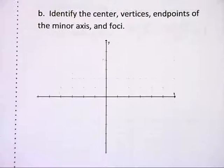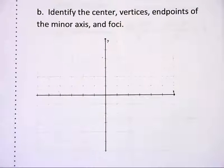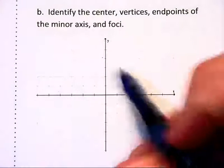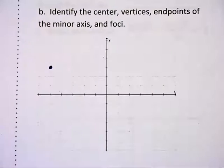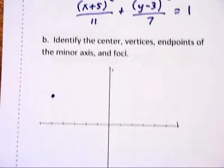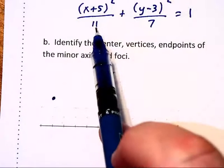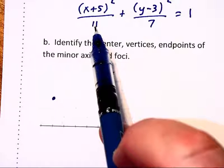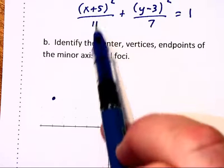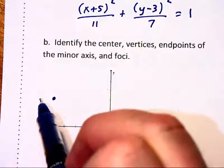Now let's graph this. The center is located as we know at (-5, 3). So I'll plot that point right there. We see beneath the x² is 11. Now the square root of 11 is just a little bit more than 3. And this is the x fraction. So we're going to go left and right a little bit more than 3.